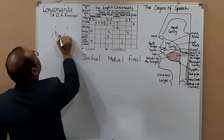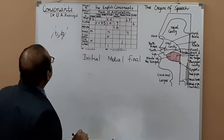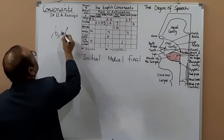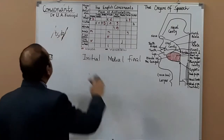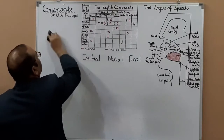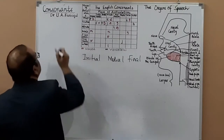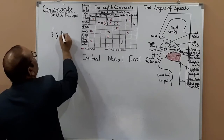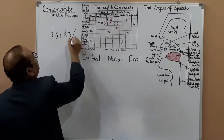This is how you write CH and J. This is CH and this is J.